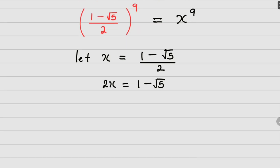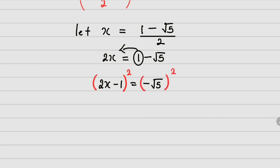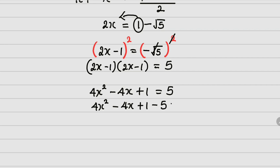I'm looking for x raised to the power 9. So the next thing to do is to square both sides. It will be better if I take this one down to this side, so I'm going to have 2x minus 1 equals negative root of 5. Squaring both sides: (2x minus 1) squared equals 5, because the negatives cancel and the square of a negative number is positive. Expanding: 4x squared minus 4x plus 1 equals 5, so 4x squared minus 4x plus 1 minus 5 equals 0.